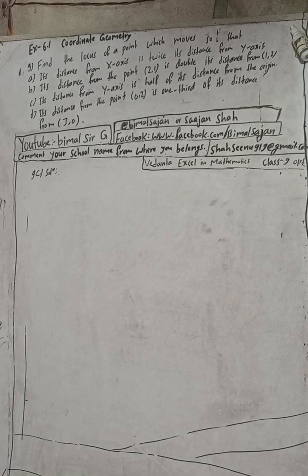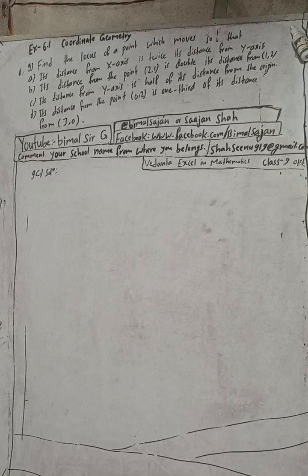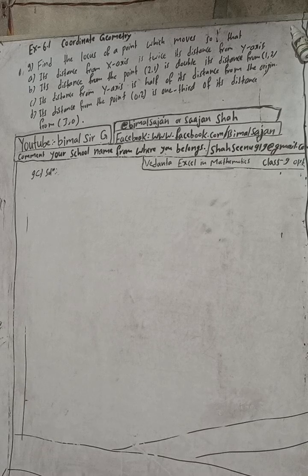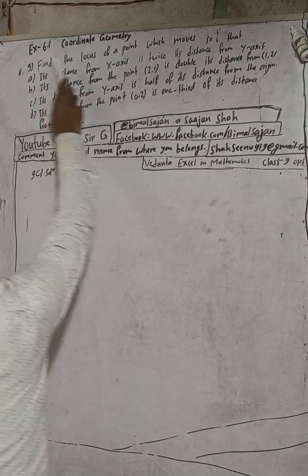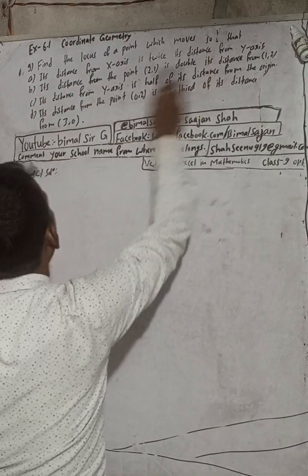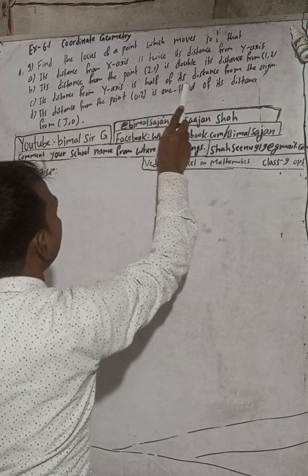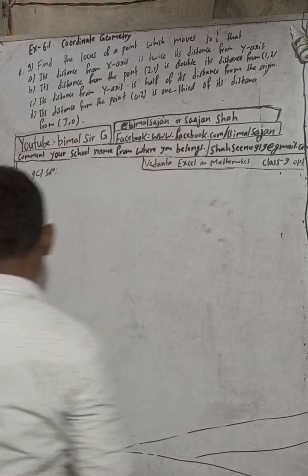Hi class 9 and 10 students, welcome back to Bimal Sir's YouTube channel. This is question number 9C solutions, exercise 6.1, coordinate geometry, class 9 optional mathematics. The question is: find the locus of a point which moves so that its distance from the y-axis is half of its distance from the origin.